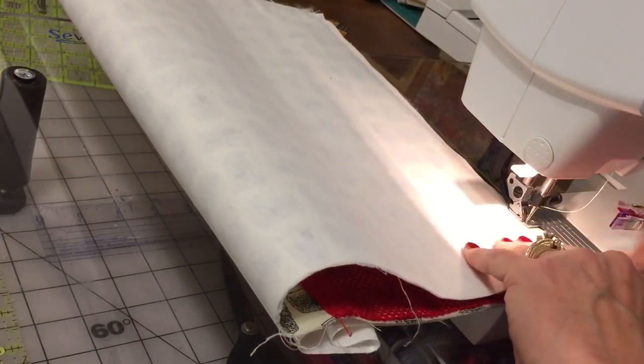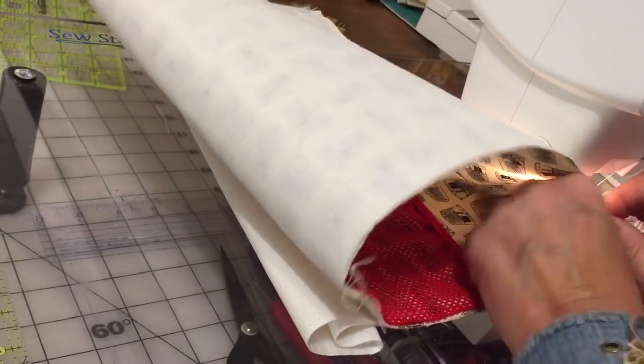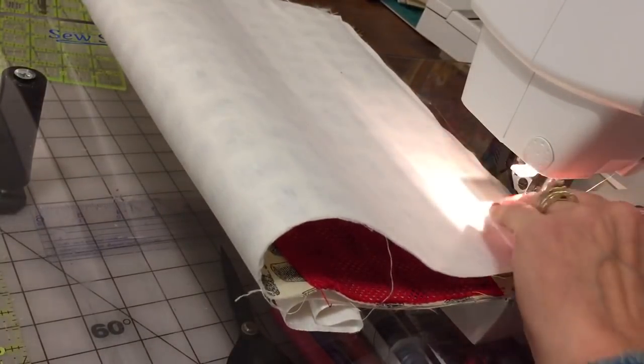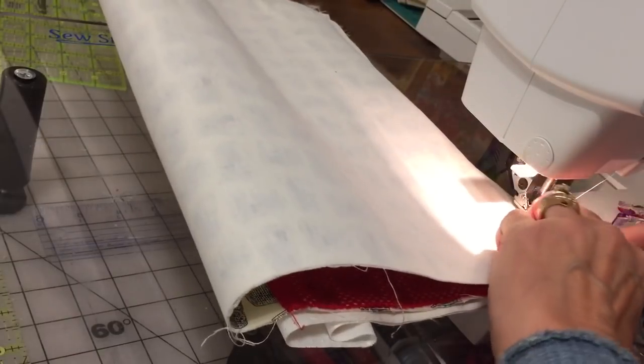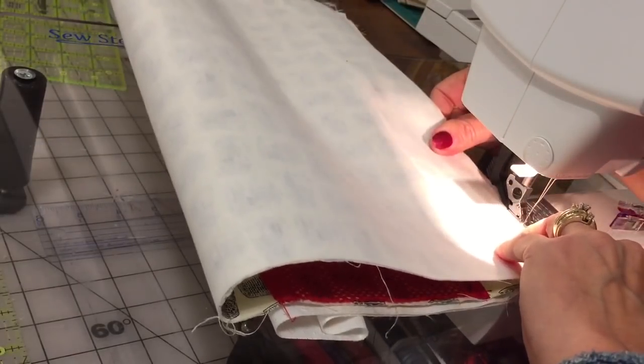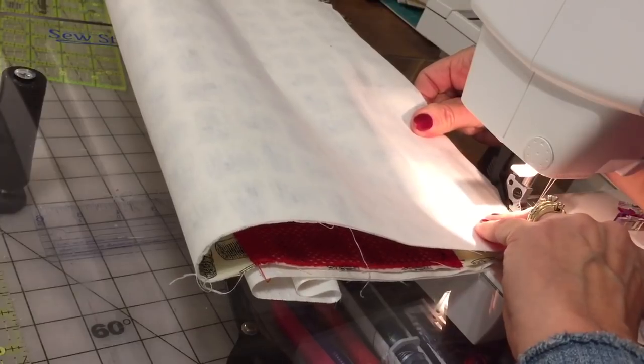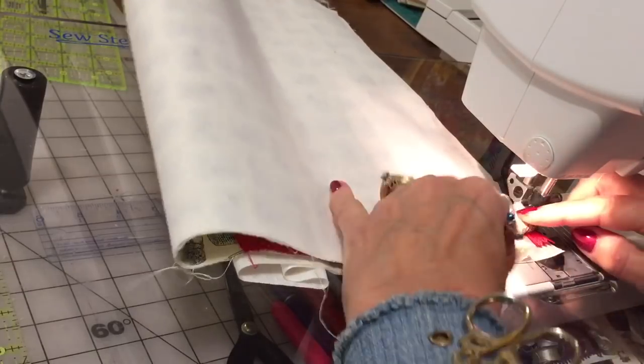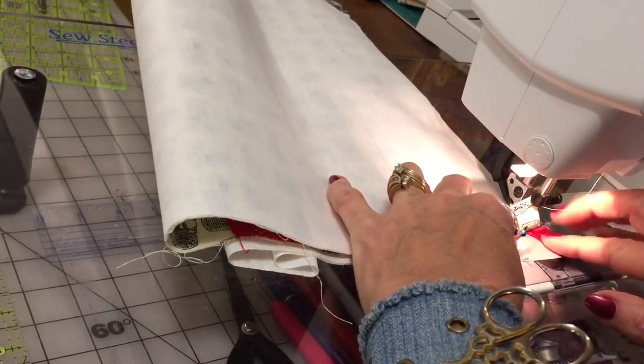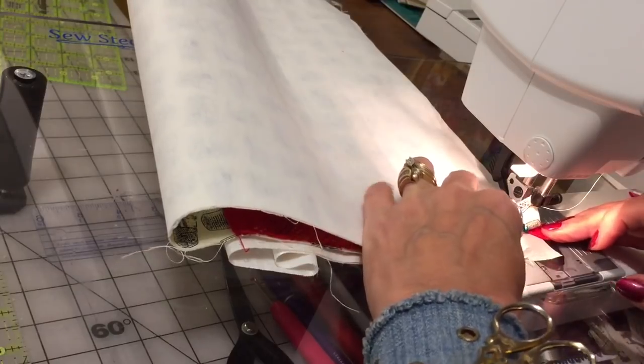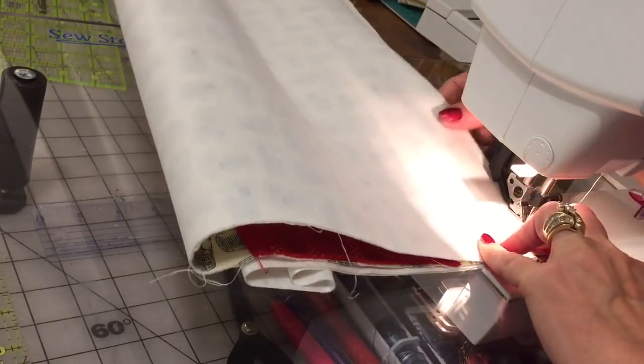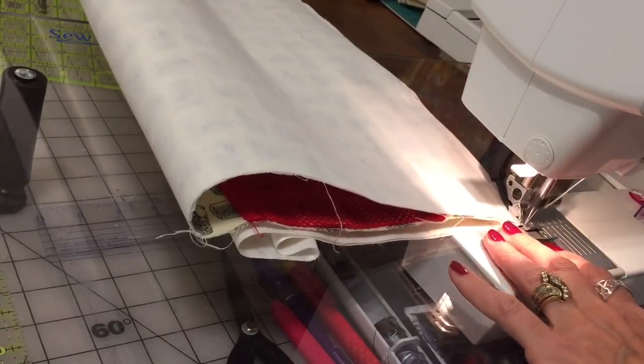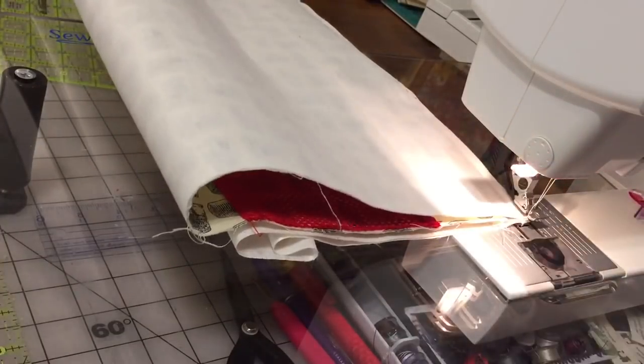Now needle down, foot up, open your zipper again. The zipper is open. Continue stitching to the end of the zipper, it's about three-fourths of an inch to the end. Now pull out the end of the zipper to the right, hold it, and stitch down to the very end. That's it.